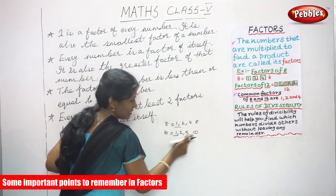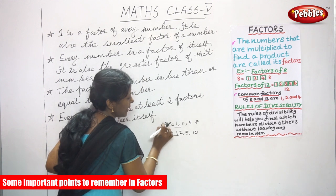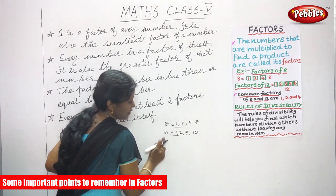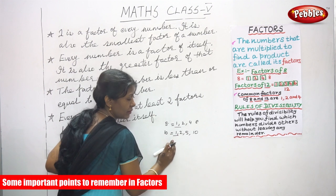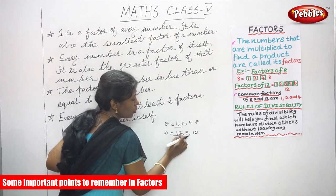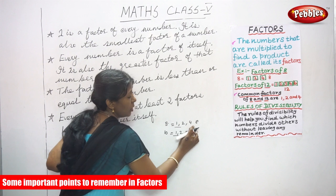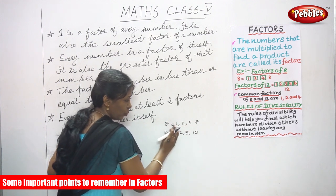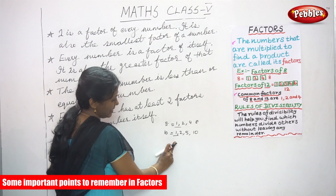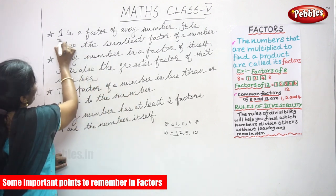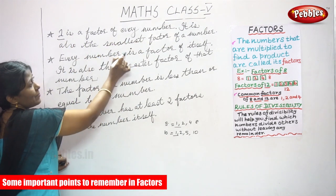In this problem, we find out the factors of eight and ten. One is the smallest factor. The other factors — two, five, ten for ten, and two, four, eight for eight — are all greater than one. So one is the very smallest factor of any number. That is the first point to remember: one is a factor of every number and it is also the smallest factor.